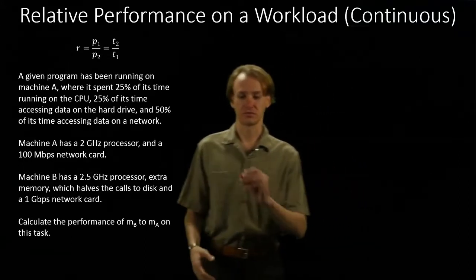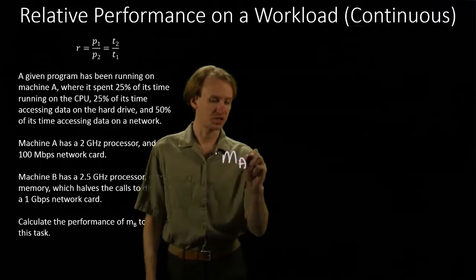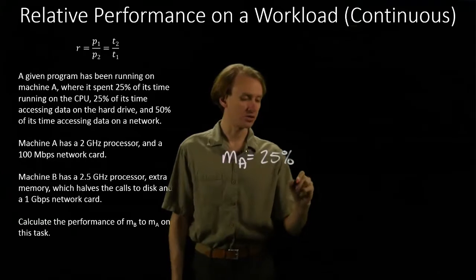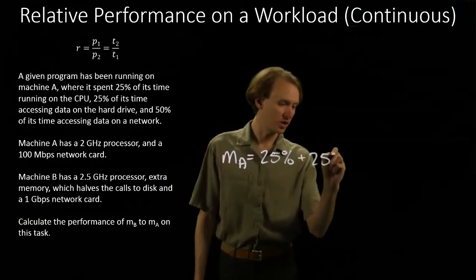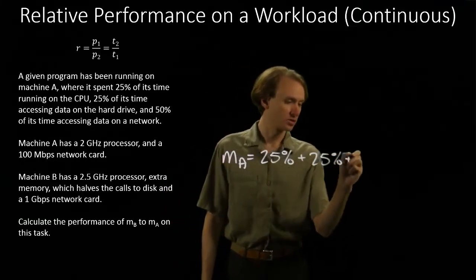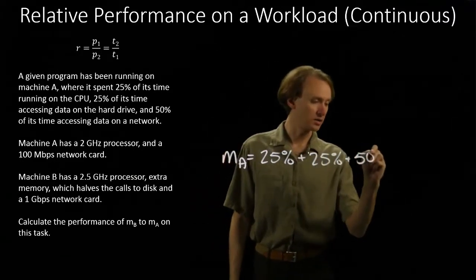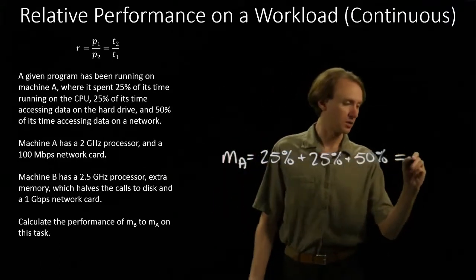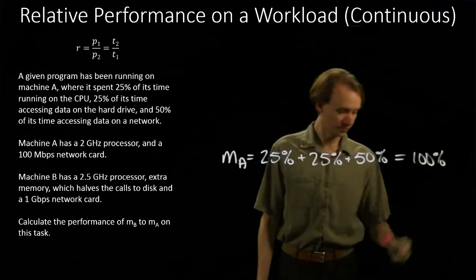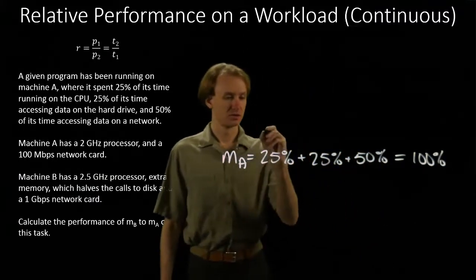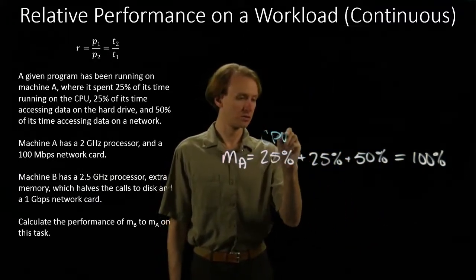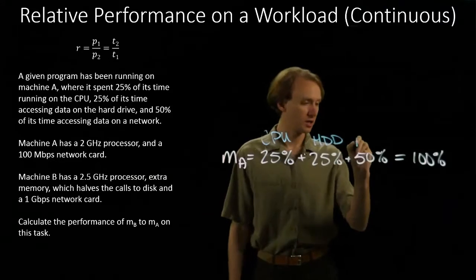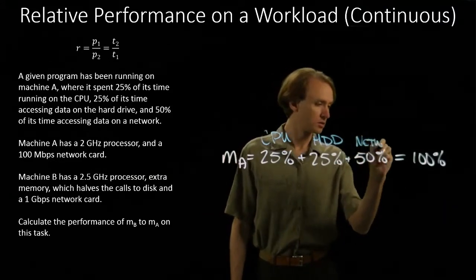So we can begin with just writing down execution time for machine A. Obviously, machine A spends 25% of its time on the CPU, 25% of its time accessing the hard drive, and 50% of its time accessing the network. That's, of course, 100% of its time. So CPU, hard disk drive, and network.